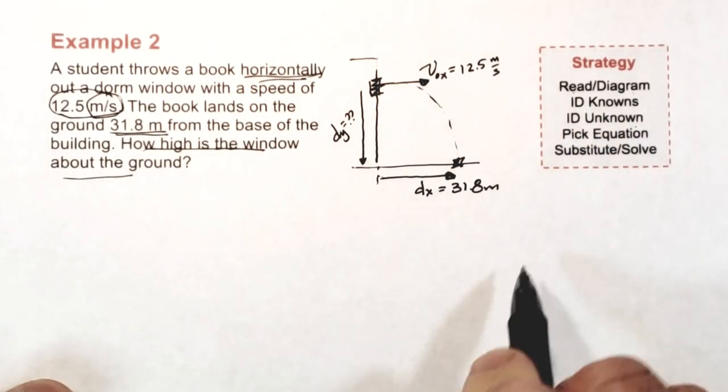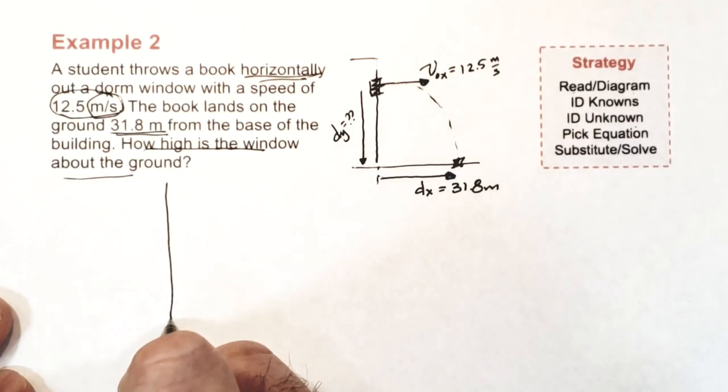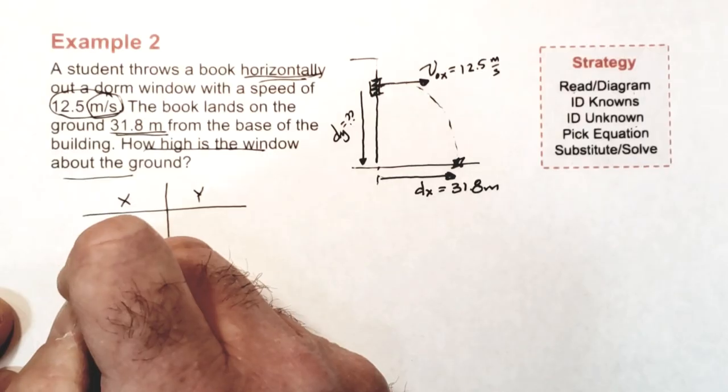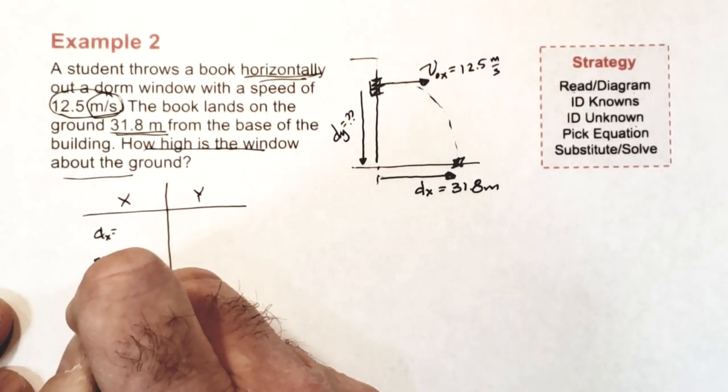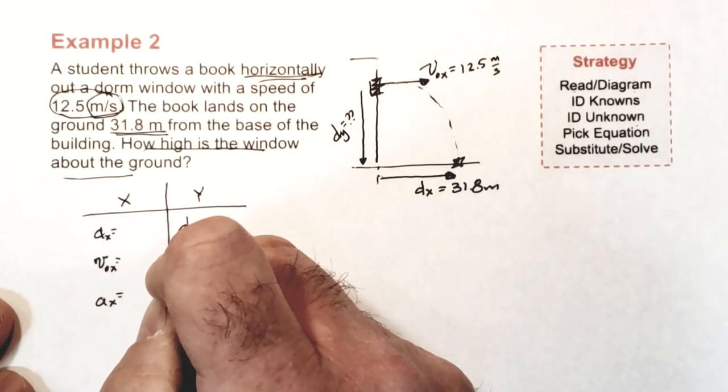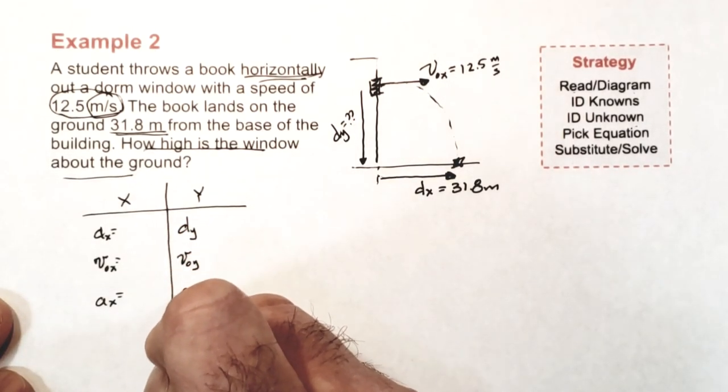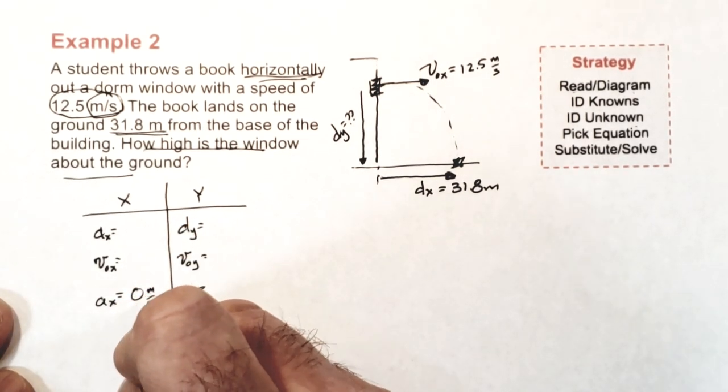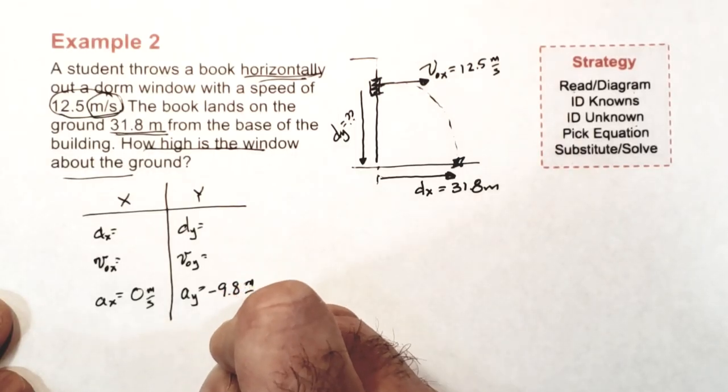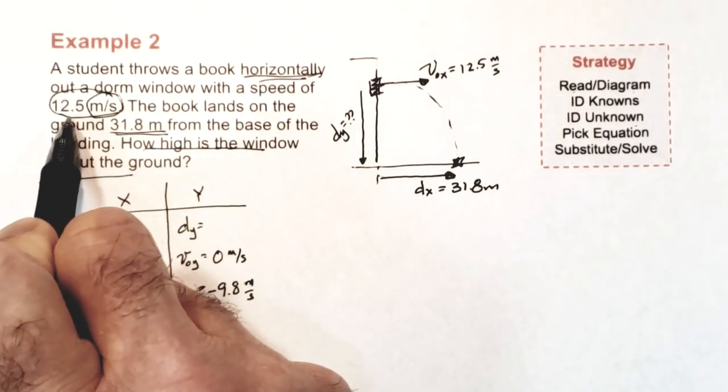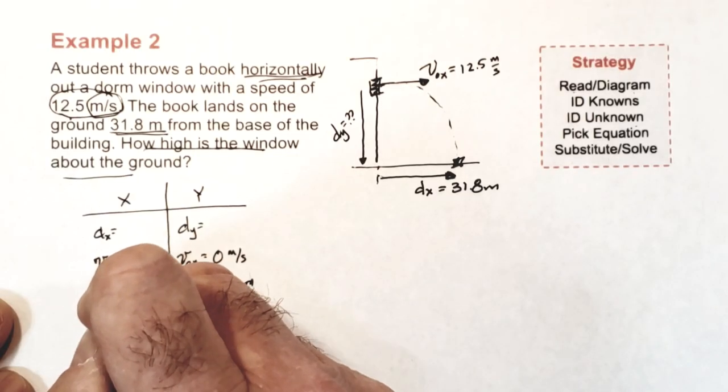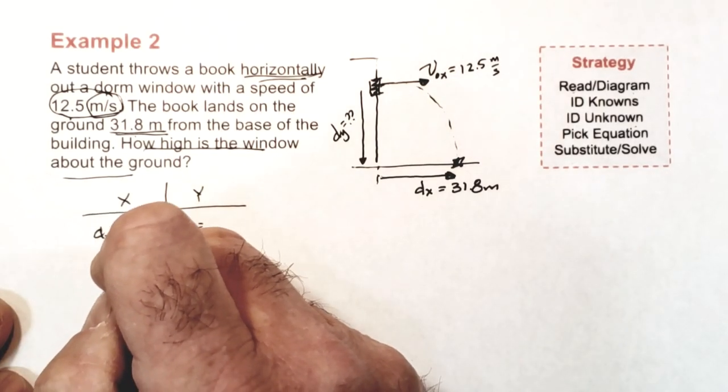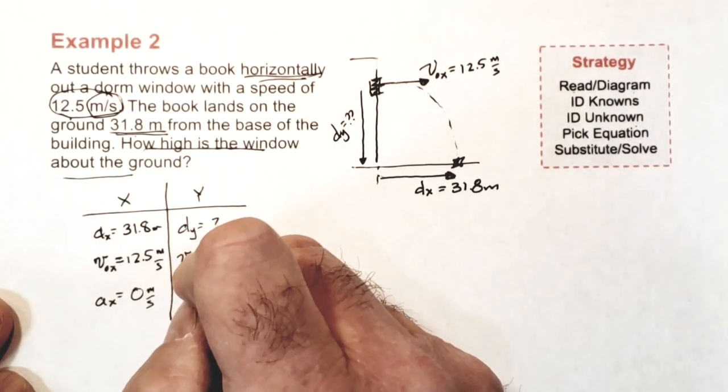The next step involves identifying the knowns and unknowns in the problem. I'm going to use an XY table to do this. So I create my XY table, and I record values of DX and DY, VOX and VOY, and AX and AY in each respective column. For any projectile, I always know AX and AY values being 0 and negative 9.8. And for a horizontally launched projectile, I know that VOY is 0. There's two more numerical values in the problem statement. I use the words around those numbers and the units to identify what they represent. Then I identify the unknown, the DY, in the problem. And then I'm done with my second and third step.